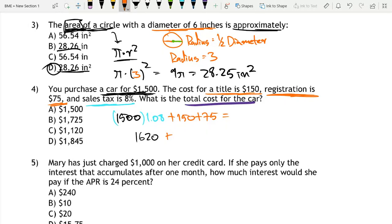$150 plus $75, that's $225. Now if we add this together, this is equal to $1,845, which is option D.